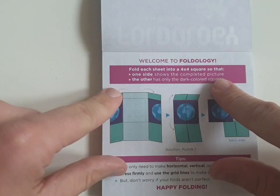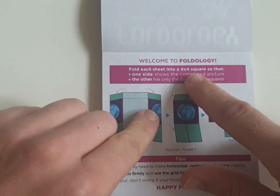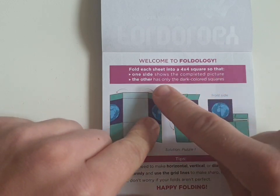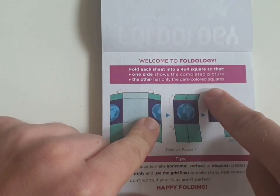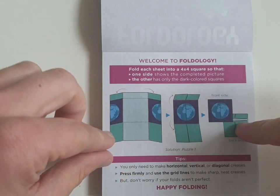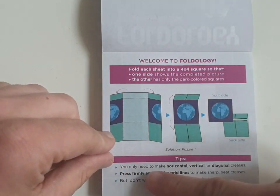So it says fold each sheet into a 4x4 square so that one side shows the complete picture and the other side has the dark colored squares on the reverse. There are some tips here.